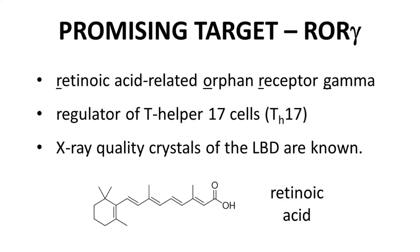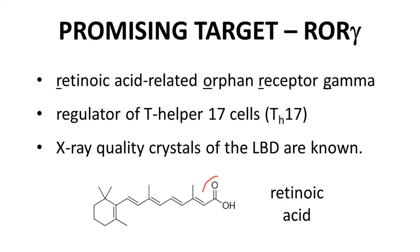At the bottom of the slide is the structure of retinoic acid. This is an orphan receptor, so the endogenous ligand is not known. Regardless, based on the name of the receptor, it is not out of place to show retinoic acid as a relevant ligand. Based on the structure of retinoic acid, we might expect ROR gamma ligands to be largely lipophilic with a small polar region, and that's largely what we'll see in this research article.